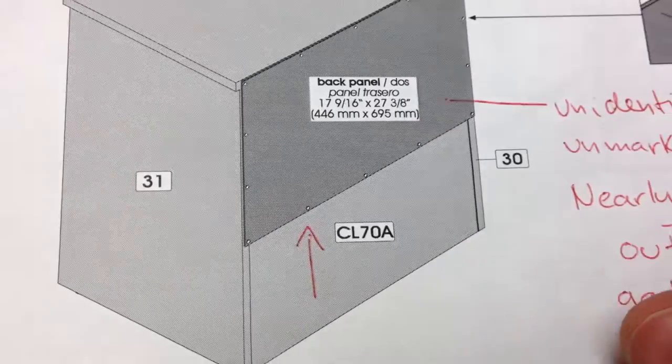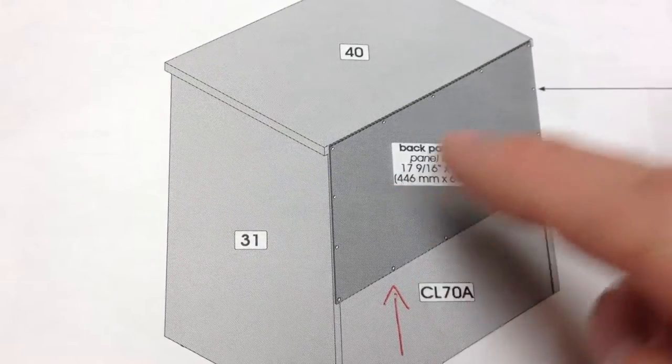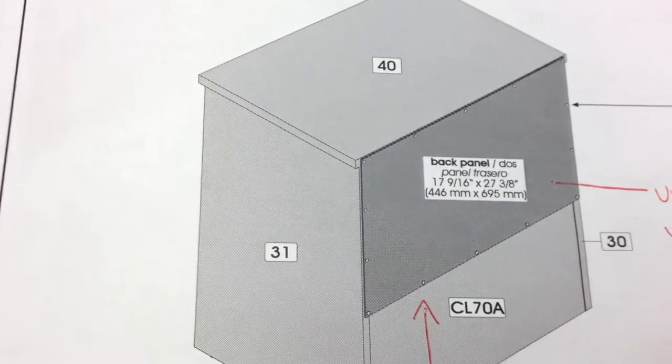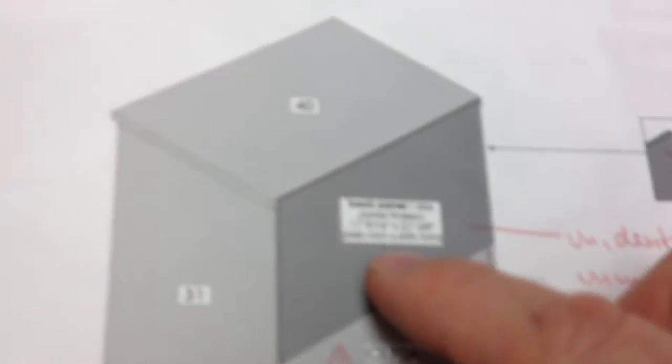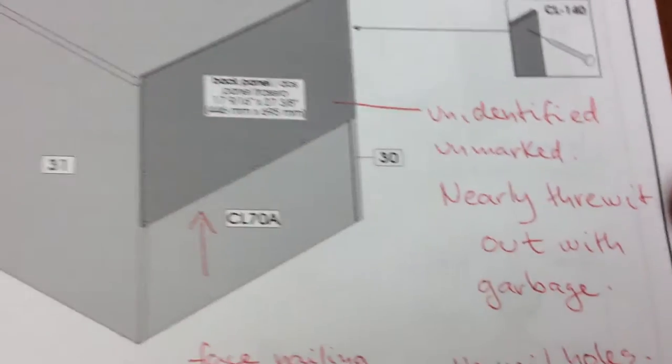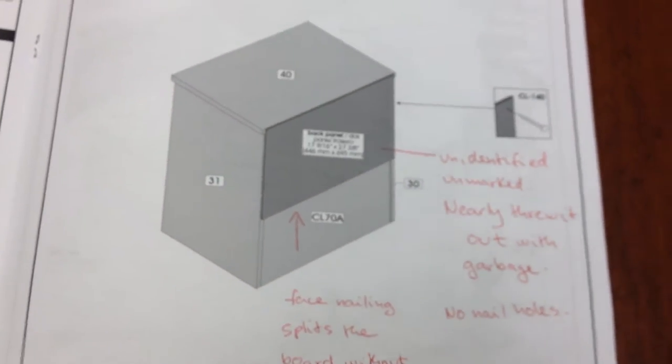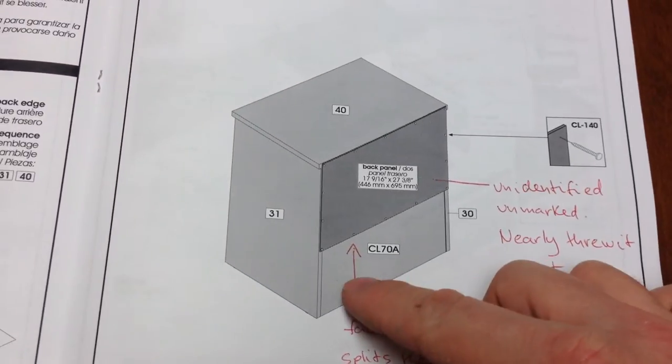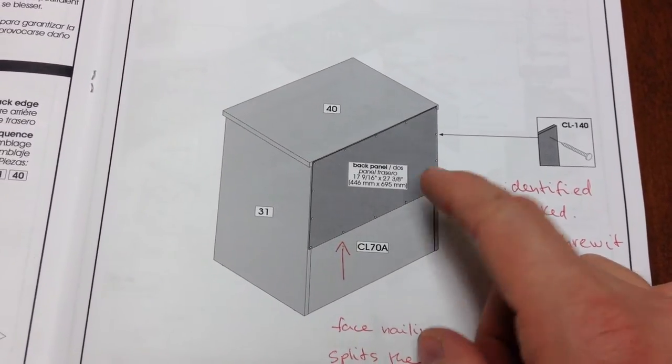You put the box together. This back, on some manufacturers, the back is pre-drilled for the nail holes, not here. Like, on that one. This piece is also unidentified and unmarked. I nearly threw it out with the garbage. That's where the whole thing should go, actually, this whole cabinet. There are no nail holes in them, and they want you to face nail along the bottom edge, too.